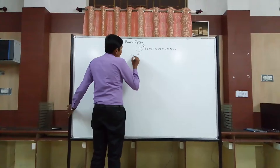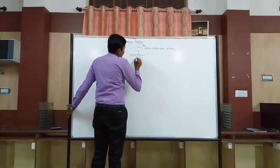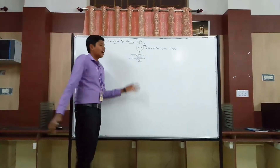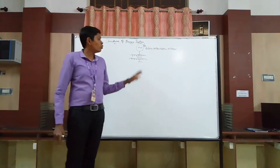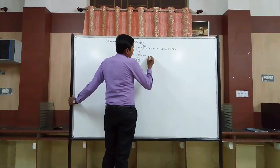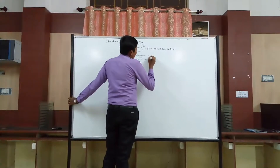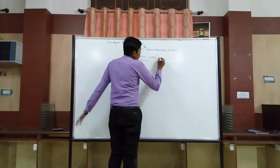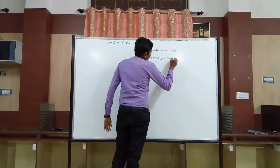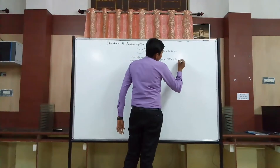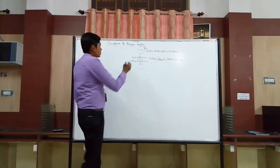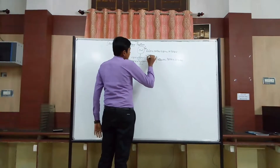Next to this, we are having a step-up transformer. The main reason that we are having a step-up transformer on the generation side is to minimize the losses. In the step-up transformer, for example, if we take 10.5 KV, it can be stepped up to 220 KV, 765 KV, or 110 KV. These are the step-up ranges we are using with the step-up transformer.